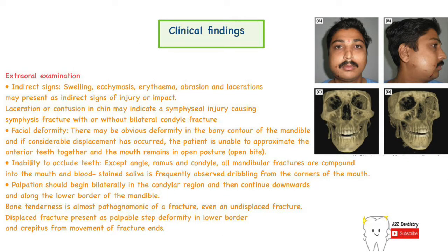Regarding clinical features on extraoral examination: the most pathognomonic sign is bone tenderness at the site of fracture. If the fracture is displaced, there will be a step deformity palpable at the fracture site. Because the bone has broken into parts, there will be crepitus or a grating noise. Indirect signs due to the impact include swelling, ecchymosis, erythema, abrasions, lacerations, and contusions.